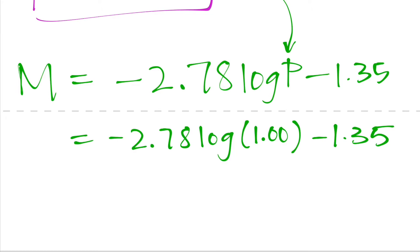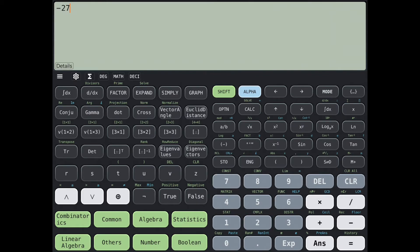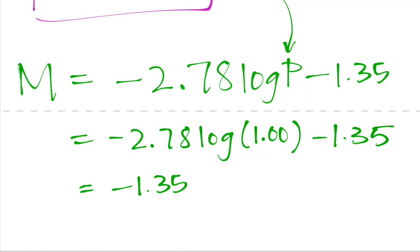So in order for us to actually solve this, I can use either a scientific calculator or I can use my phone and use the simple calculator app. So if I were to type out the numbers, I get negative 2.78 times the log of 1. This number down here is the base of the logarithm. If there's no base that's been specified, you can automatically assume that that number is a 10. Now I have negative 2.78 times the log of the period, which was one day, minus 1.35. And that equals to negative 1.35, which is pretty convenient since it's an easy number to remember. So I got negative 1.35 as my absolute magnitude.